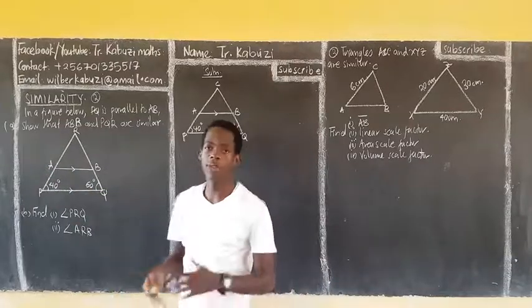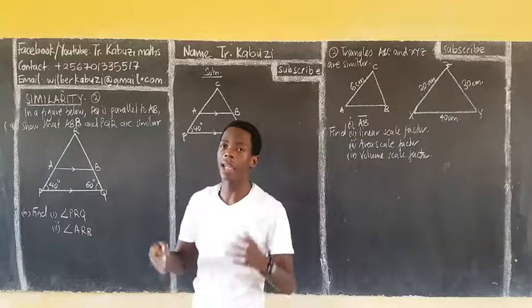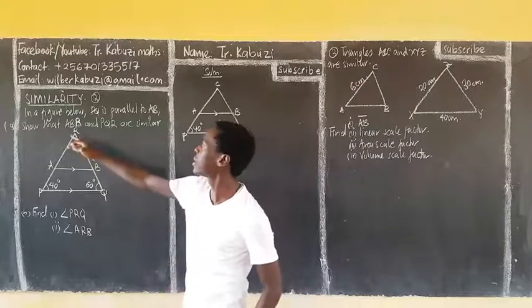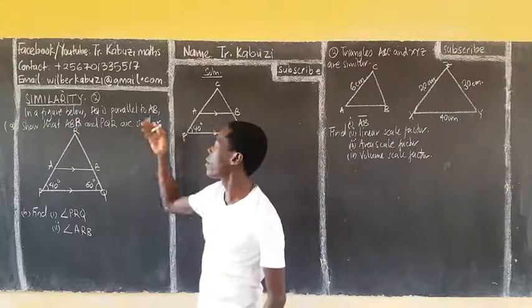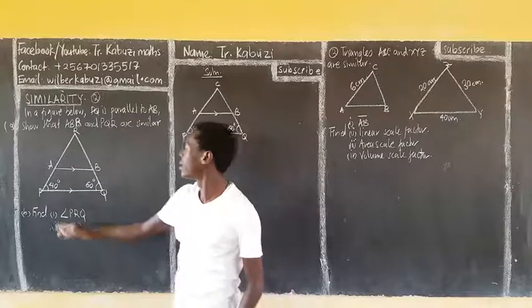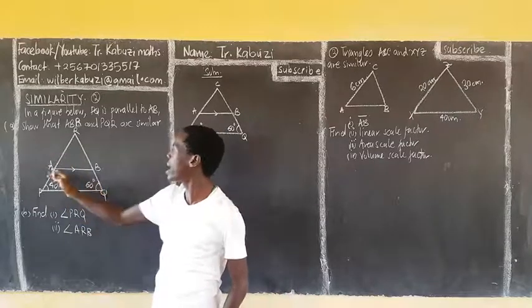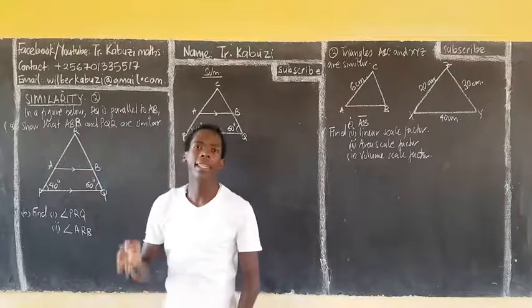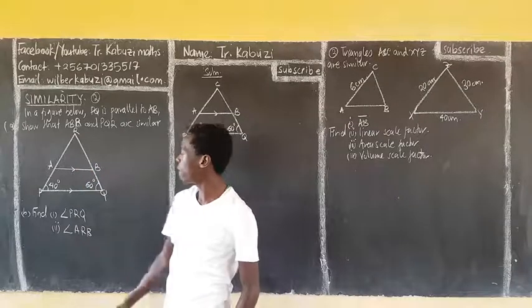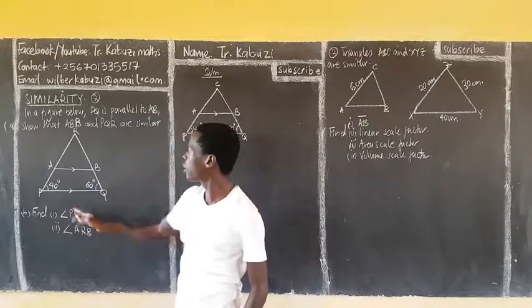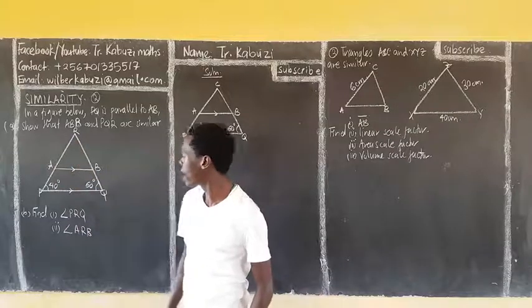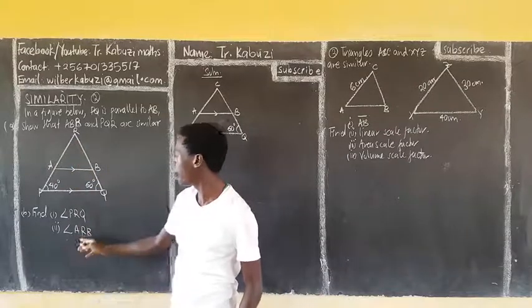So in addition, that equiangular triangles, all corresponding angles are equal. Let us see, show that ABR and PQR are similar. All I need to know that the triangle PQR and ABC are having the same corresponding angles. I also find the size of PRQ, this angle, and also the size of ARB.